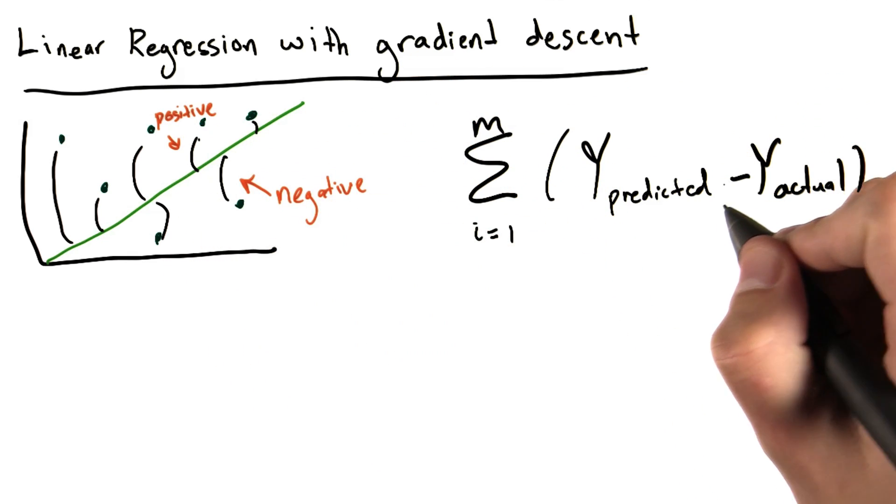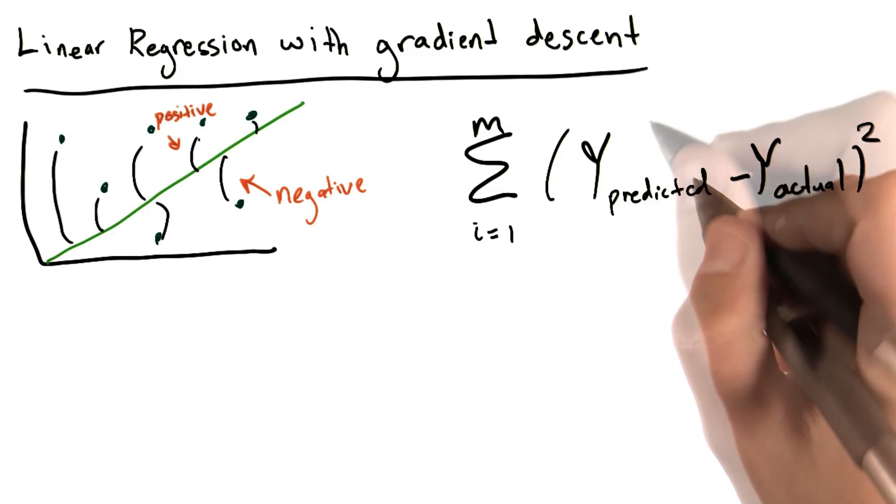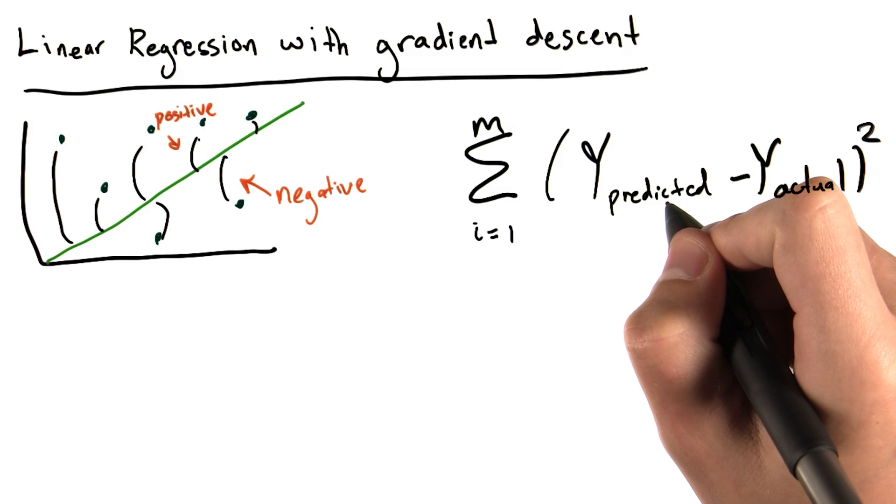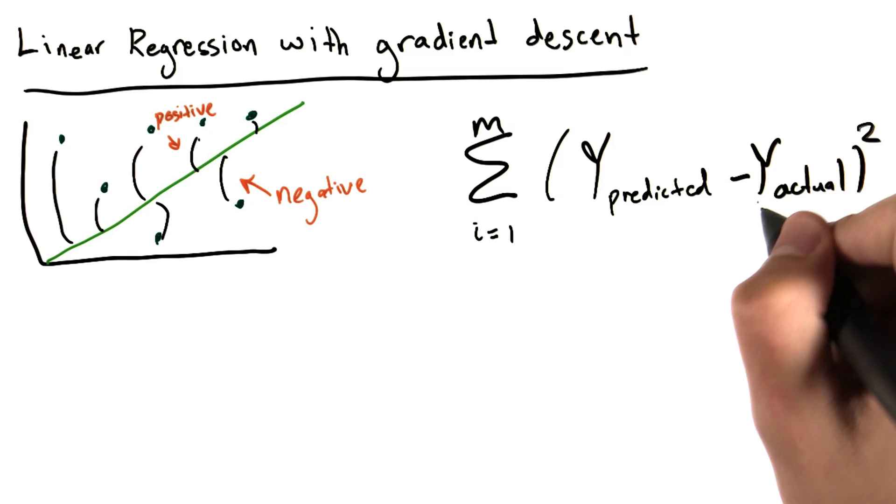In order to correct this, rather than simply adding up the error terms, we're going to add up the square of the error terms. This guarantees that the magnitude of each individual error term, y predicted minus y actual, is positive.